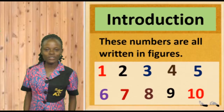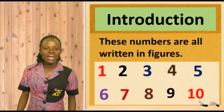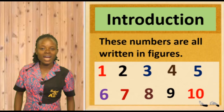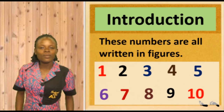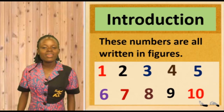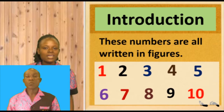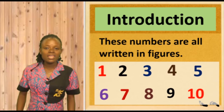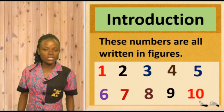That's very good. 1, 2, 3, 4, 5, 6, 7, 8, 9, and 10. These are numbers 1 to 10 and they are all written in figures. They are not written in words here — they are written in figures. That's how they look in figures.